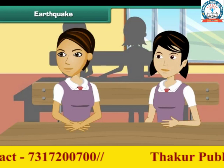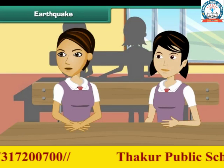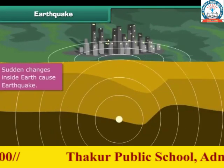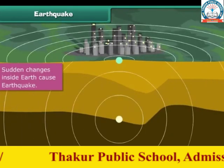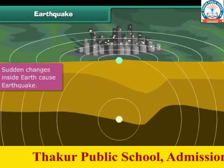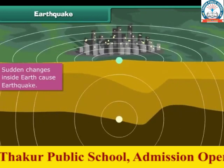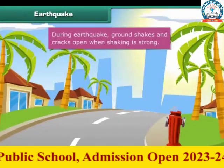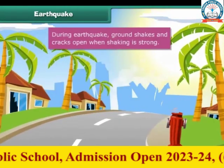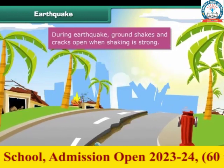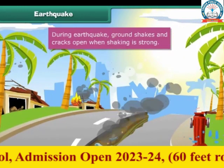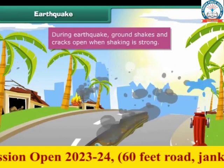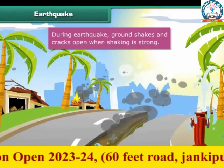How does an earthquake occur? When there is a sudden change deep inside the earth, it shakes the earth's crust, causing an earthquake. When an earthquake takes place, the ground shakes. When the shaking is severe, the ground cracks open at places.